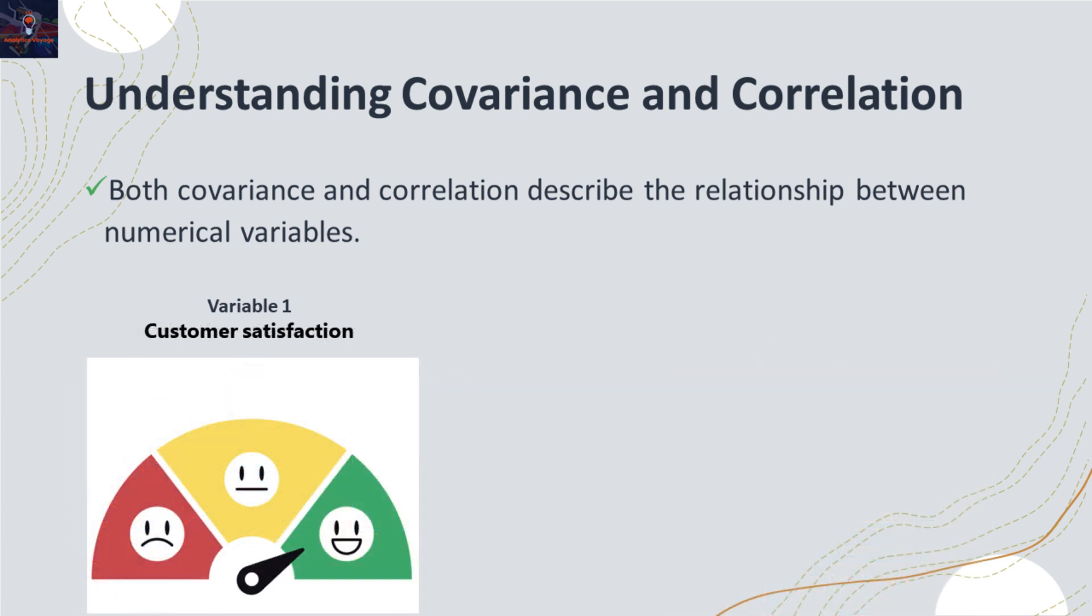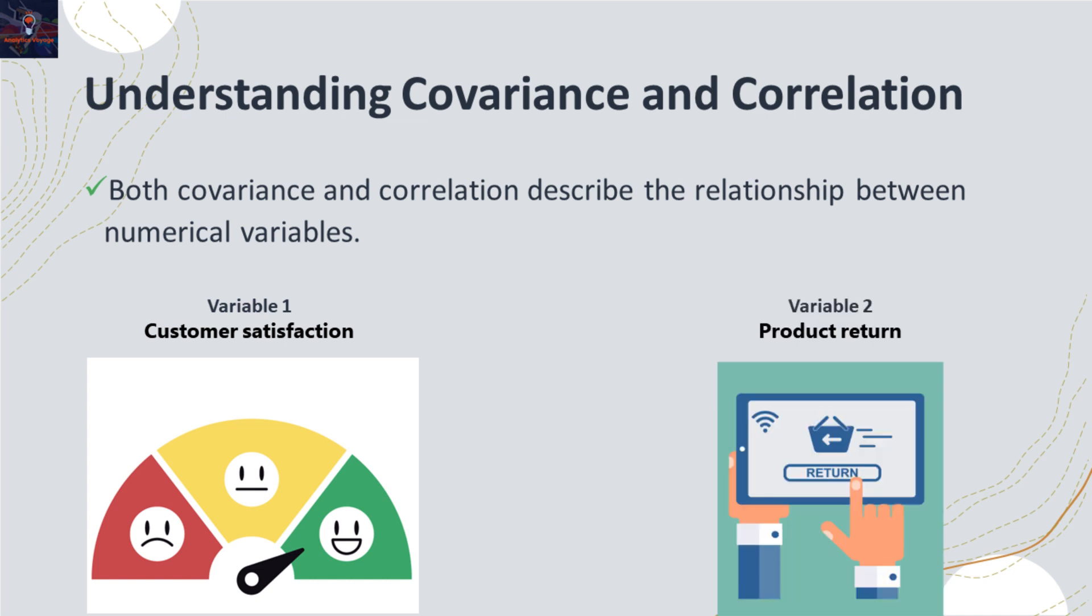Now, let's take a look at two different variables. Consider customer satisfaction scores for a retail store as your first variable and total number of product returns as second variable.